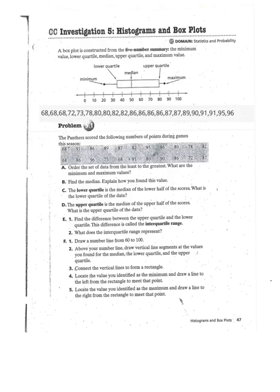For our last problem, they are looking at the number of scores a Panther had following number of points during games a season. So, the data below is not in order, so for part A, they want you to order the set of the data from the least to greatest and find what are the minimum and maximum values.